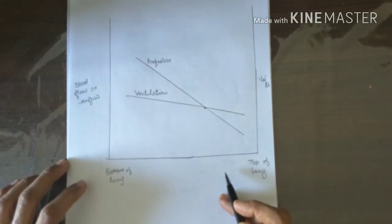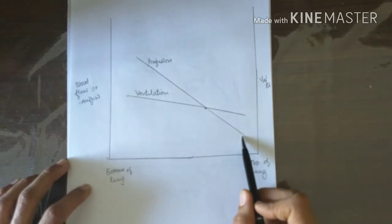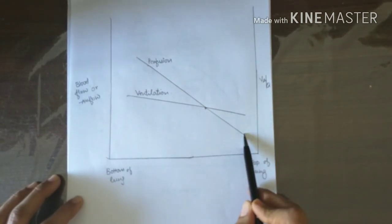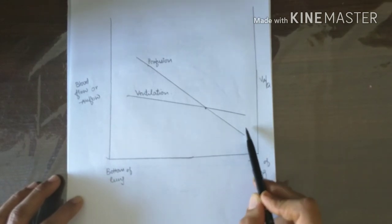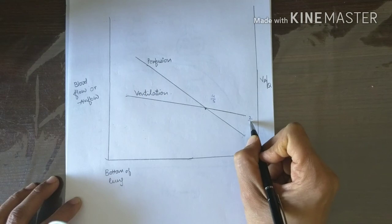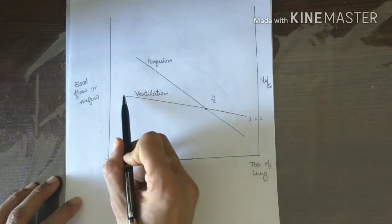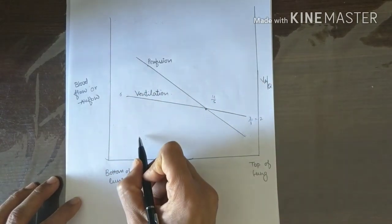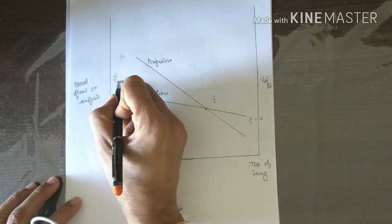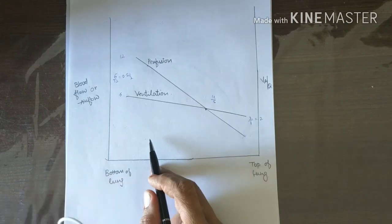This diagram shows the effect of gravity on the ventilation perfusion ratio. In the apical part, both ventilation and perfusion decrease, but perfusion decreases more, so the ratio increases — for example from 4/5 (normal ~0.9) to 2/1 (ratio = 2). At the bottom of the lungs, ventilation increases from 4 to 6 but perfusion increases even more from 5 to 12, making the ratio 6/12 = 0.5. So the ratio decreases in basal alveoli.